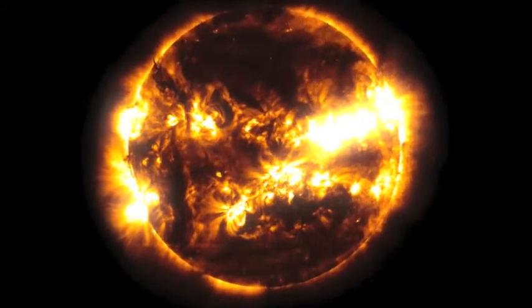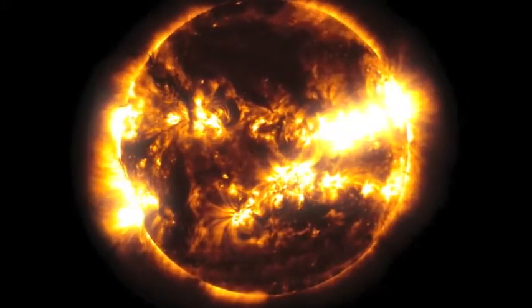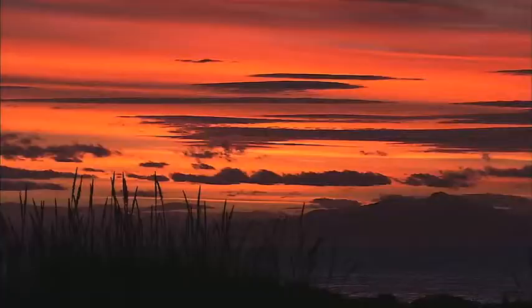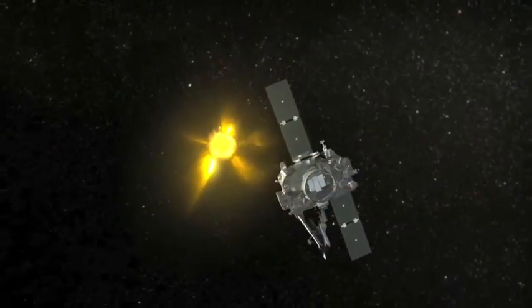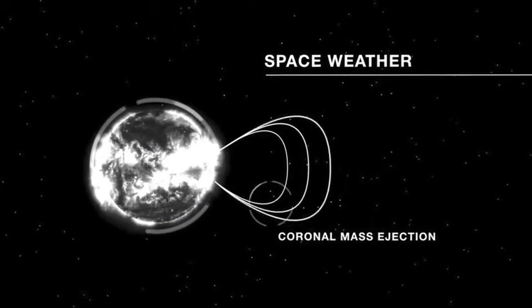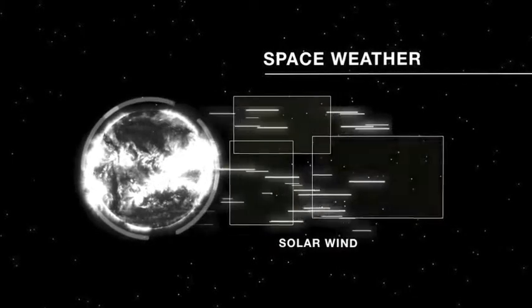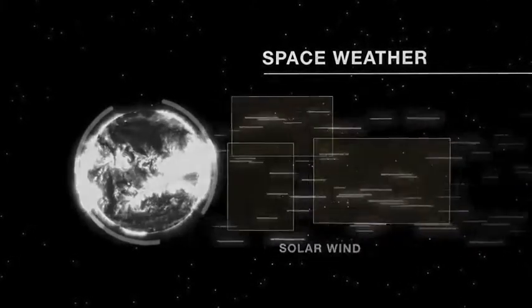We need to understand the Sun, because the Sun changes our lives every day. We all know that the Sun makes the weather. But when we're flying things in space, astronauts, satellites, the Sun affects them even more directly. The Sun puts out what we call space weather. Space weather causes problems with our satellites, our astronauts, our communication systems here on Earth, and our navigation systems.